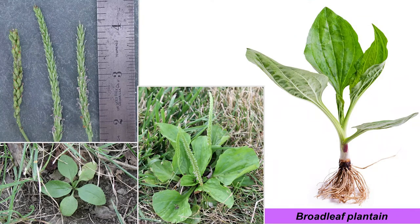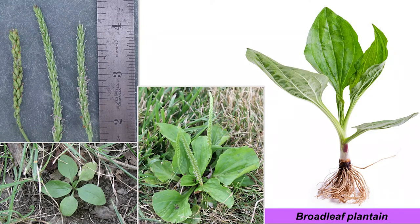Broadleaf plantain is a related species. This cool season perennial has broad oval-shaped leaves, and the petioles can be reddish or purplish. Like buckhorn, it forms a rosette and has parallel veins. The flowers are small, white to pink, and are borne in dense clusters at the upper ends of the stalks, appearing like fingers or rat tails. Flowering occurs May to September for both types of plantains.